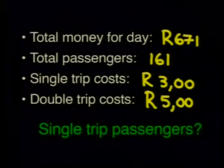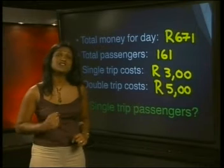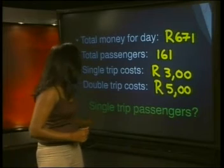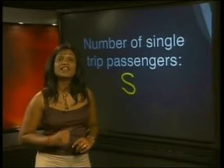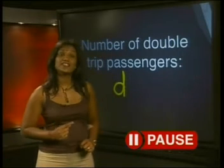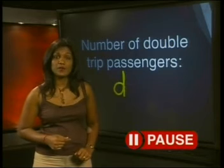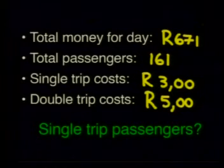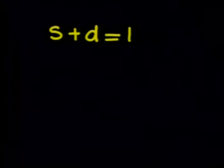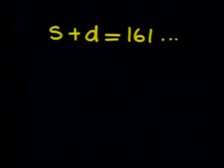We must find the number of passengers who paid for a single trip. We're looking for the number of single trip passengers, so let's assign a letter symbol to this. We'll call the number of single trip passengers S. We don't know the number of passengers that paid for a double trip either, so let's call this D. Now we can set up equations to solve. We know that the total number of passengers is 161, so we can write S plus D is equal to 161 as our first equation.